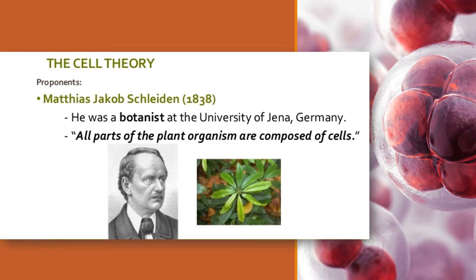Next, we have Matthias Jacob Schleiden in 1838. He was a botanist at the University of Jena, Germany, and he stated that all parts of plant organisms are composed of cells.